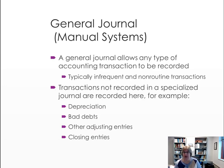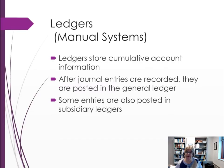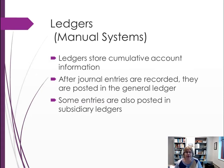The general journal is used for infrequent, non-routine items such as closing entries, depreciation, bad debts, other adjusting entries, or write-offs. It is more freeform and allows you to debit and credit any account. An important note: you do not record an entry in both journals — you record it either in the specialized journal or the general journal, not both. At month end, we summarize all the data from our journals.